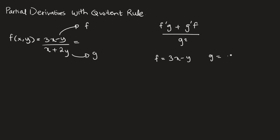So we can write: f equals 3x minus y, and g equals x plus 2y. Then we will find the derivatives of f and g and plug them into this formula to find the partial derivatives.